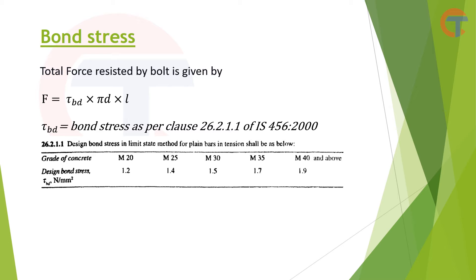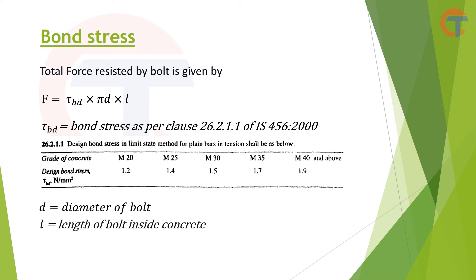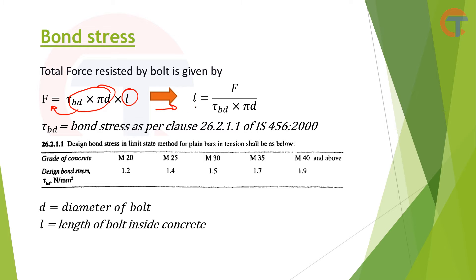In the formula, π is 3.14, D is the diameter of the bolt, and L is the embedment length of the bolt inside the concrete — that is, the total length of the bolt which is inside the concrete; the portion above the concrete is not considered. This formula can also be rearranged: L = F / (τ_BD × π × D). So if you have the total force coming on the bolt, you can directly calculate the required embedment length.